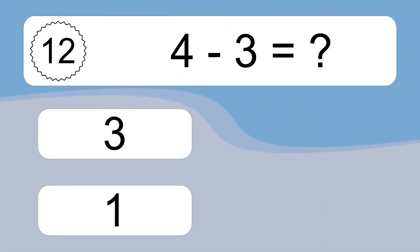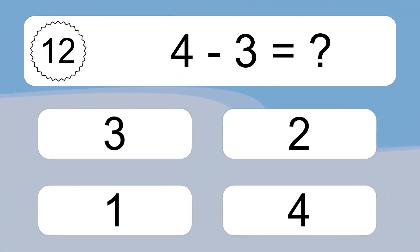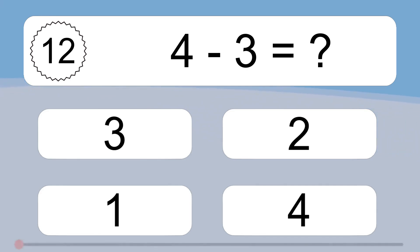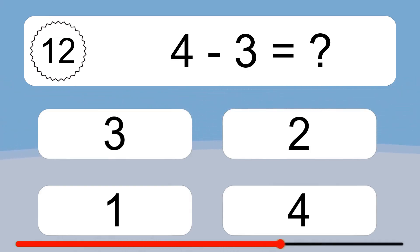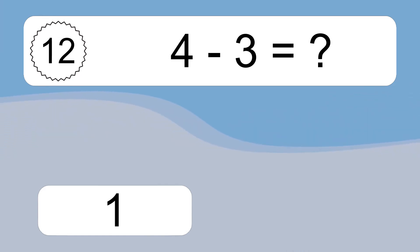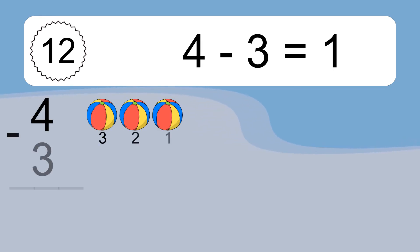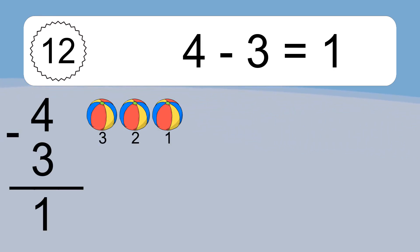4 minus 3 equals what? 4 minus 3 equals 1. Let's count it: 3, 2, 1.